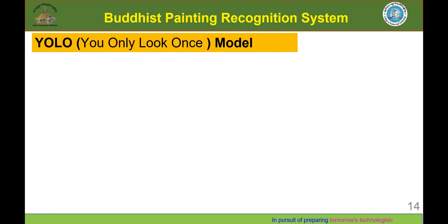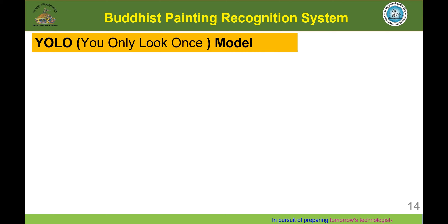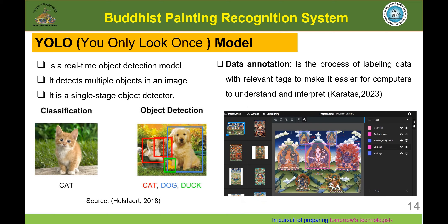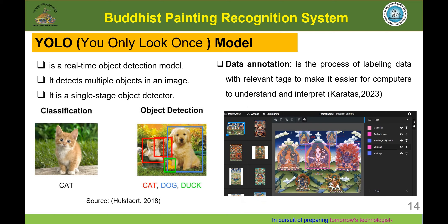We successfully trained the VGG16-based model, but it was not enough to meet our aim and objectives because it was not able to detect multiple beings in a single image. This leads to our next method — YOLO, You Only Look Once. It is a real-time object detection method that detects multiple objects in an image and is a single-stage object detector, as depicted in the picture.